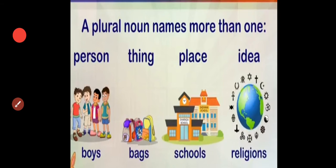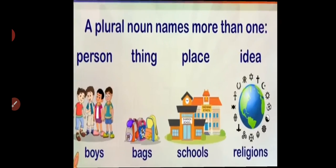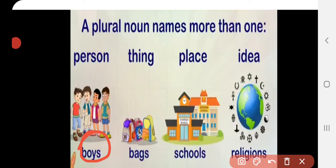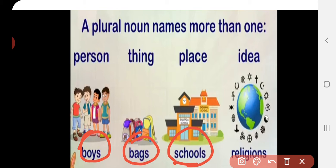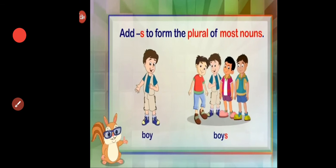Next let us see plural nouns. A plural noun names more than one person, thing, place, or idea. For example, a group of boys — four boys — is a plural noun. We can also see many bags, many schools, and in India we see a number of religions, so religions is a plural noun.